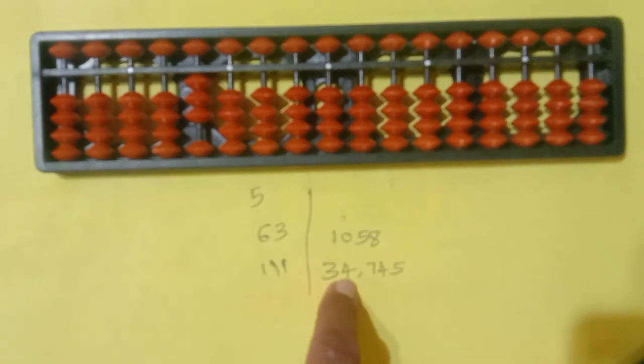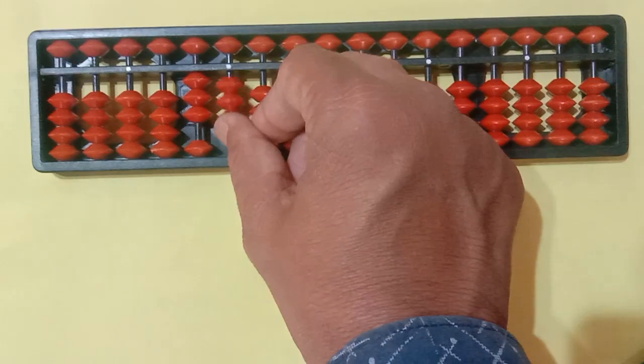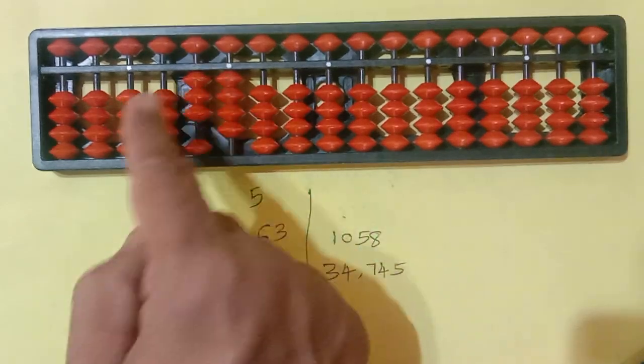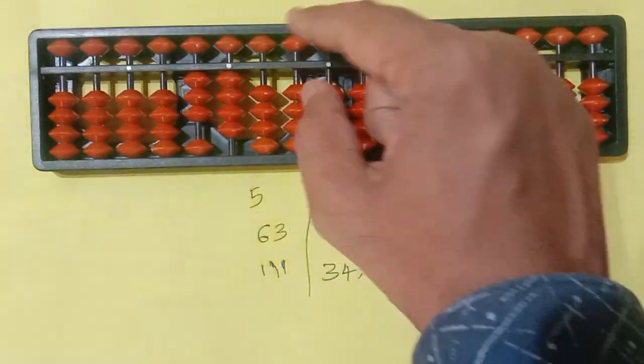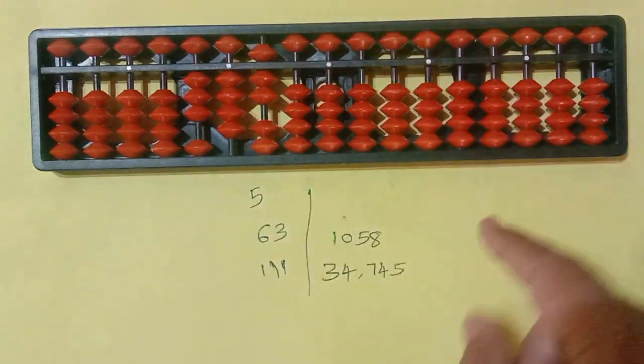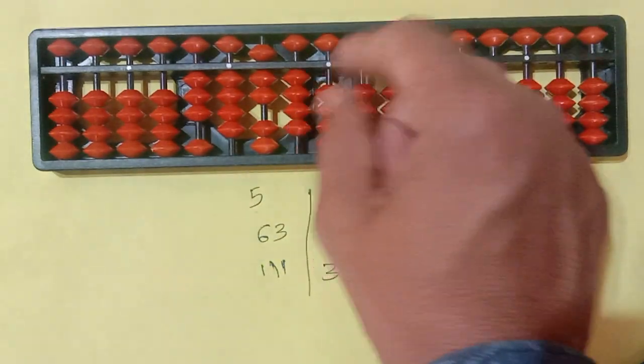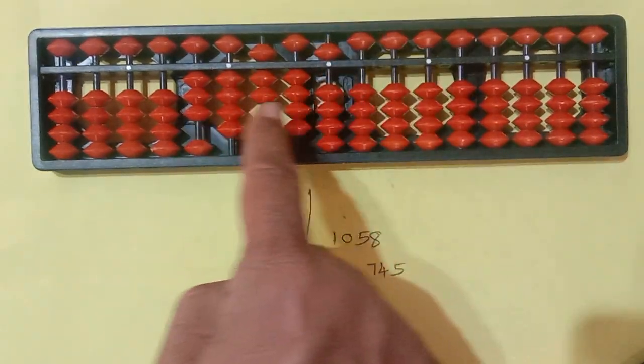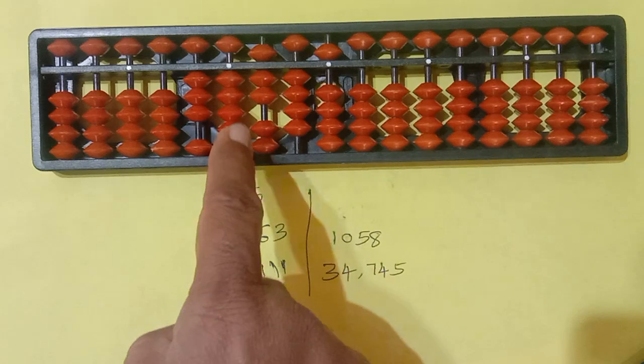Now it is 4,000. 34,000 now. Now 745. So this is 34,745.